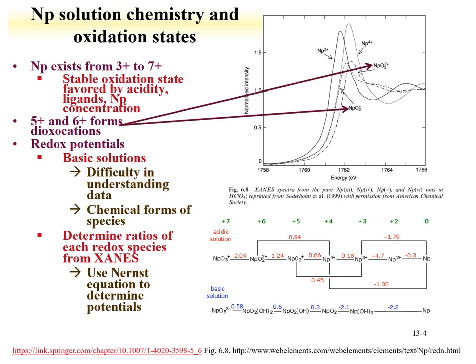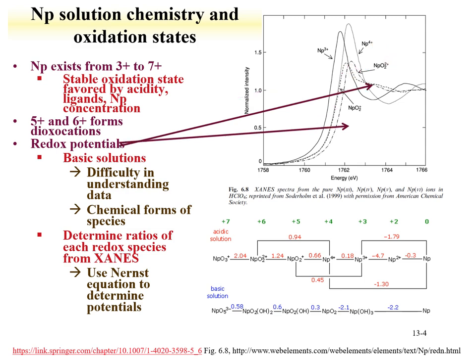Similar to uranium, the +5 and +6 oxidation states form dioxocations. The redox potentials for neptunium have been evaluated, and in basic solutions there's some difficulty evaluating the data due to complex chemical speciation. XANES data shows the absorption edge of different neptunium species as a function of oxidation state: neptunium-3 absorbs early, neptunium-4 next, while neptunium-5 and -6 show behavior indicative of the axial oxygens. This information can be used to determine the ratio of different oxidation states in solution, and by using the Nernst equation the redox potentials can be determined.